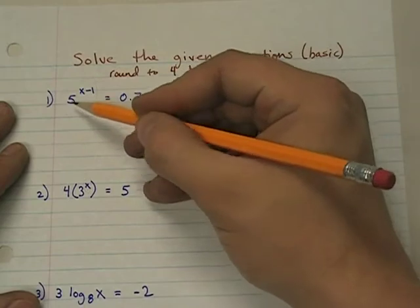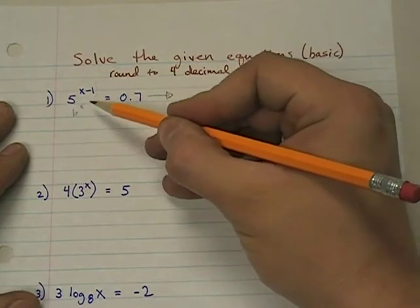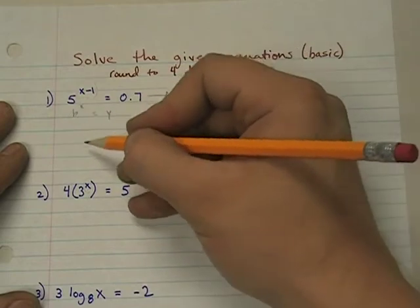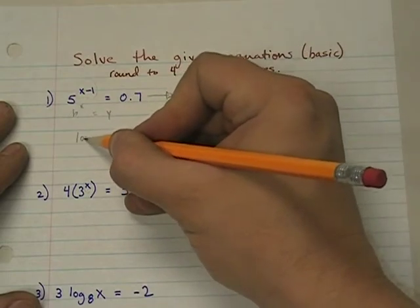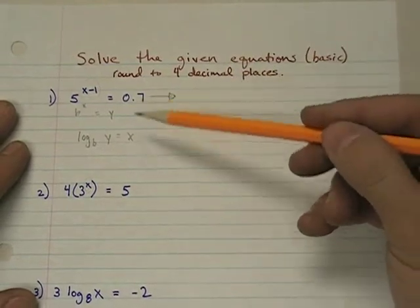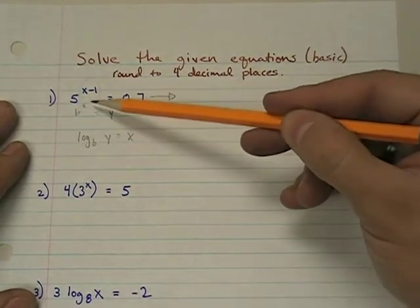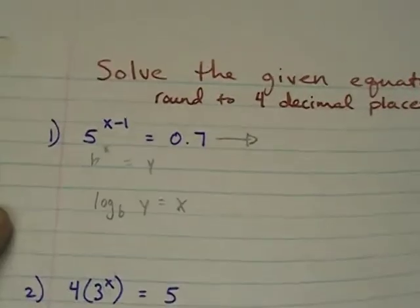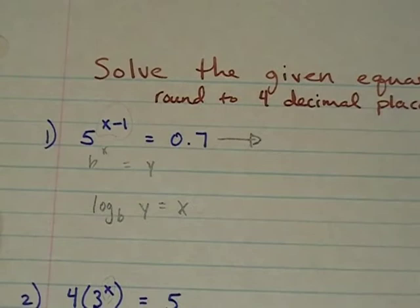If you look at this you have got b to the x equals y. And if you have b to the x equals y, then log b of y equals x. This is your conversion formula. So b to the x equals y, then log b of y equals x.